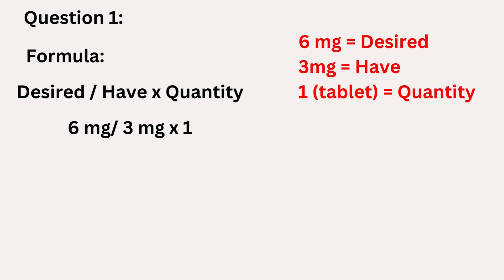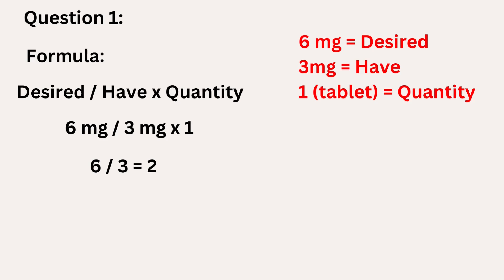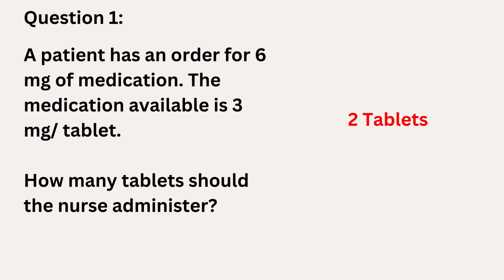Now we're going to remove the problem and focus on our important elements: desired, have, and quantity. We set up our formula — desired over have times quantity — and plug in our numbers. Six milligrams is our desired, three milligrams is what we have, and the quantity is one. So the first part is six milligrams divided by three milligrams, which equals two. We then multiply that answer by our quantity, which is one. Two times one equals two. The final step is to give our answer in the appropriate unit — tablets. The nurse should administer two tablets.